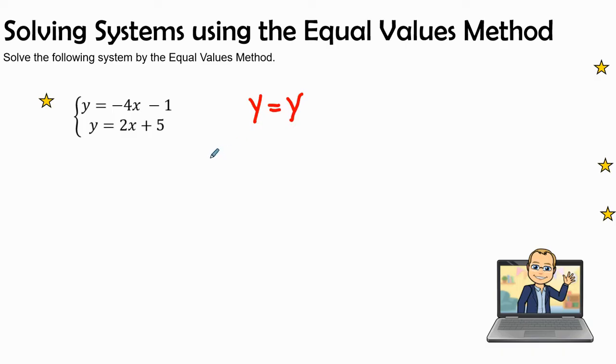Therefore, I could plug in negative 4x minus 1 for what this y value is, and then I set it equal to 2x plus 5. Let's solve by subtracting 2x on both sides.